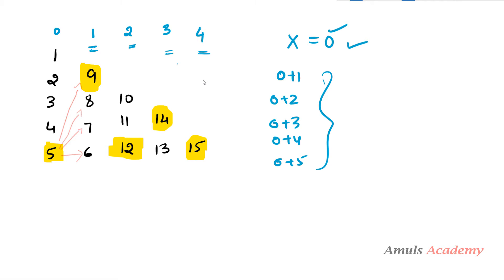If you're still confused: when writing this pattern manually you write 1, 2, 3, 4, 5, 6, 7, 8, 9, 10, 11, 12, 13, 14, 15. So the last values of each column are 5, 9, 12, 14, 15 — these are the x values we need.